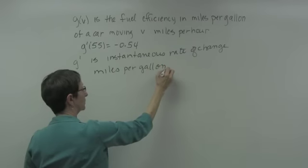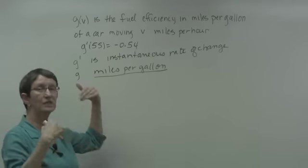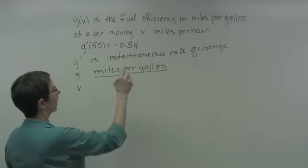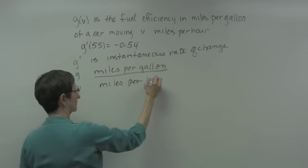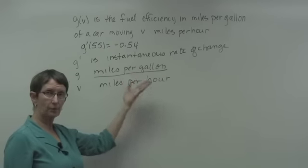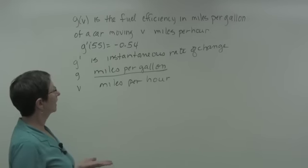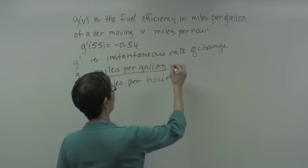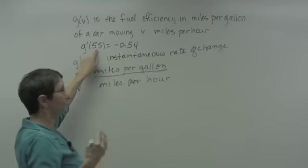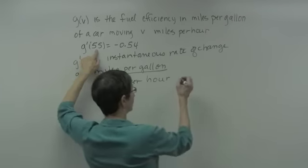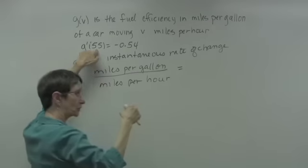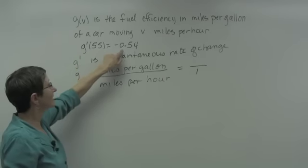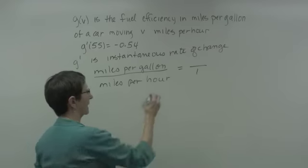The units in the numerator are g's units: miles per gallon. The denominator units are the v units: miles per hour. So the rate of change has units of miles per gallon over miles per hour. The input is 55 miles per hour, and the value of g prime is negative 0.54.